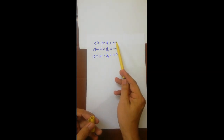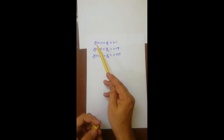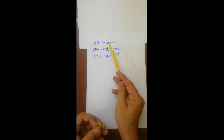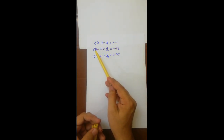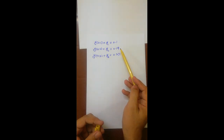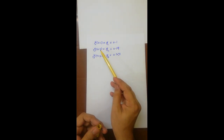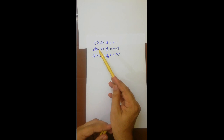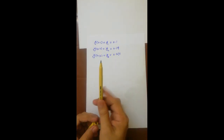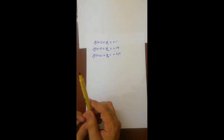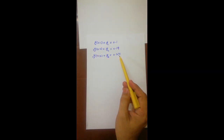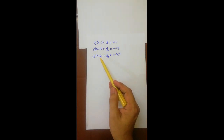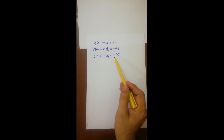We have solved the question. y(0.1) = 0.1 means when x = 0.1, y ≈ 0.1. y(0.2) = 0.19 means when x = 0.2, y ≈ 0.19. And y(0.3) = 0.27 means when x = 0.3, the approximate value of y is 0.27.